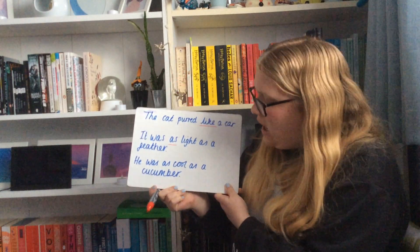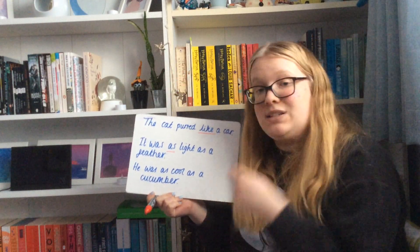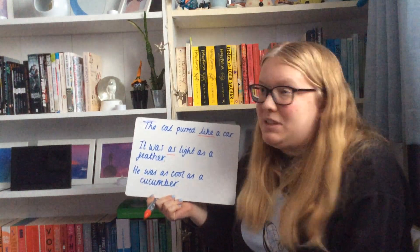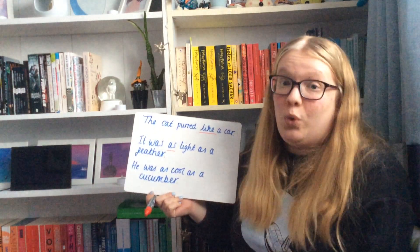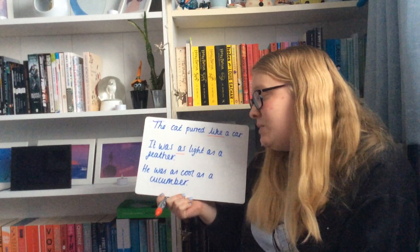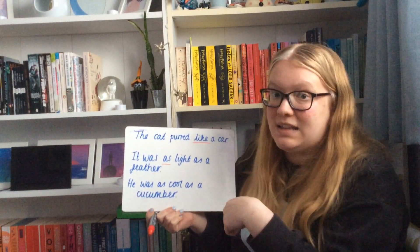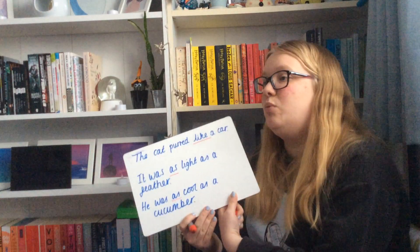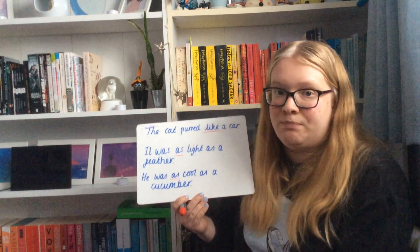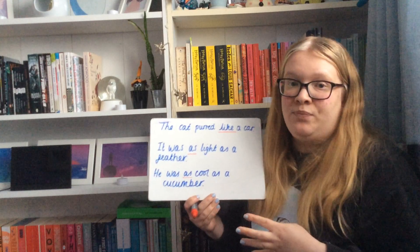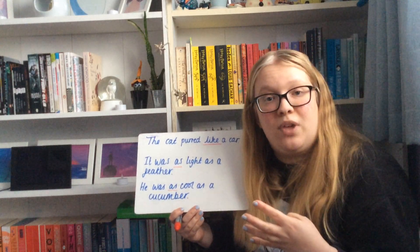And the last one: he was as cool as a cucumber. That'd be silly to say that he was a cucumber. Instead we're saying he was as cool as — not saying he is, we're saying he was as cool as. That's a simile: saying something is like something.